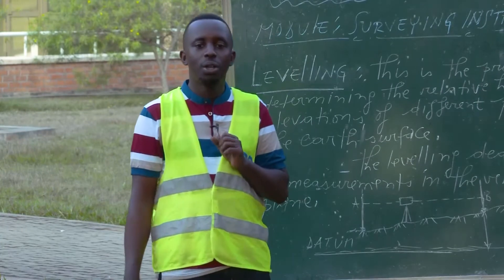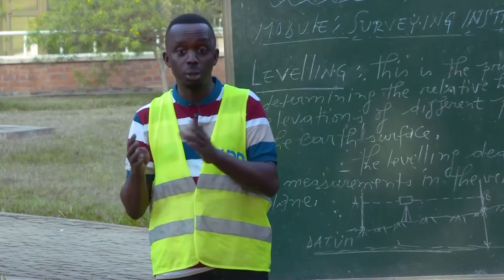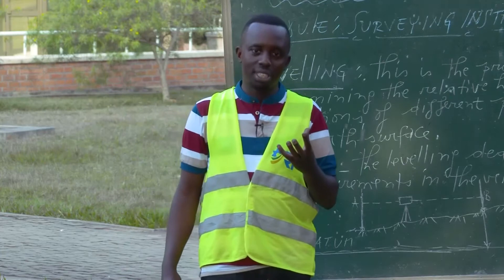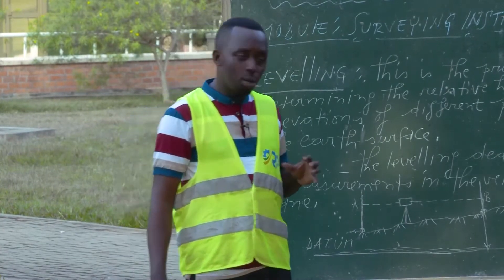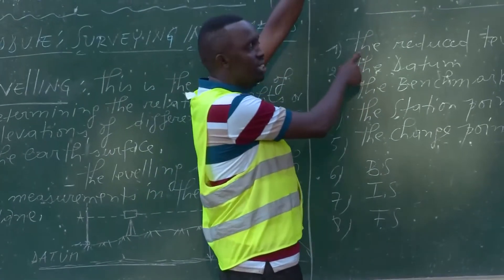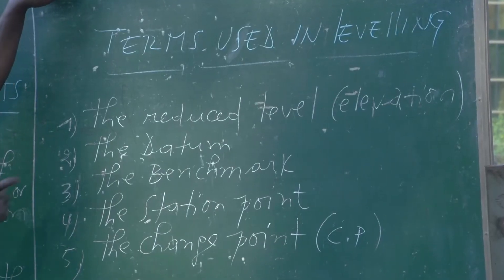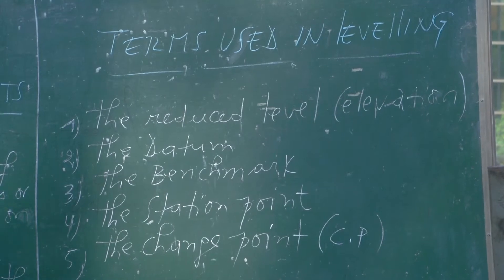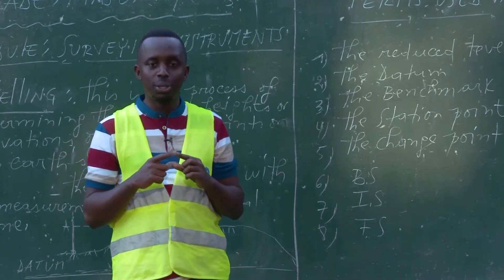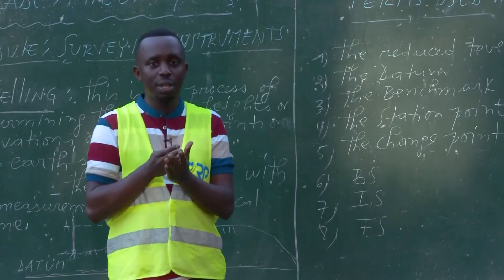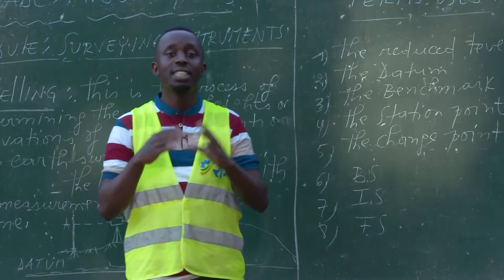In leveling, you need to be familiar with some technical terms as they are used in leveling. We are going to be using them during our leveling practice today. Those technical terms include, for example, the reduced level of a point. The reduced level of a point is the level of that point taken as its height above the datum — it is the vertical difference between that point and the datum.